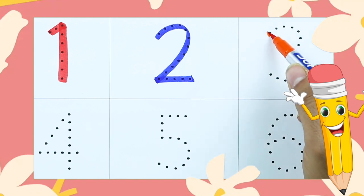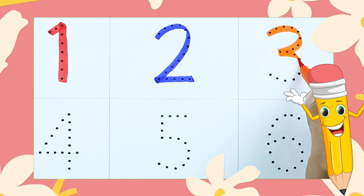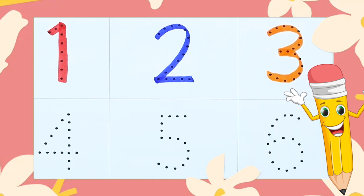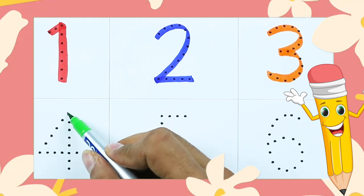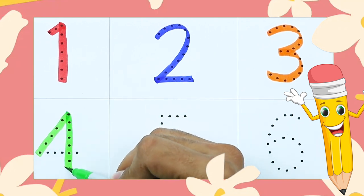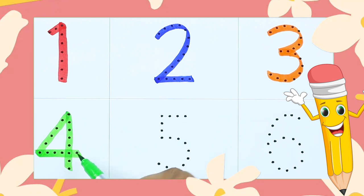It's number 3, 3 is with orange color. It's number 4 with green color. It's number 4.